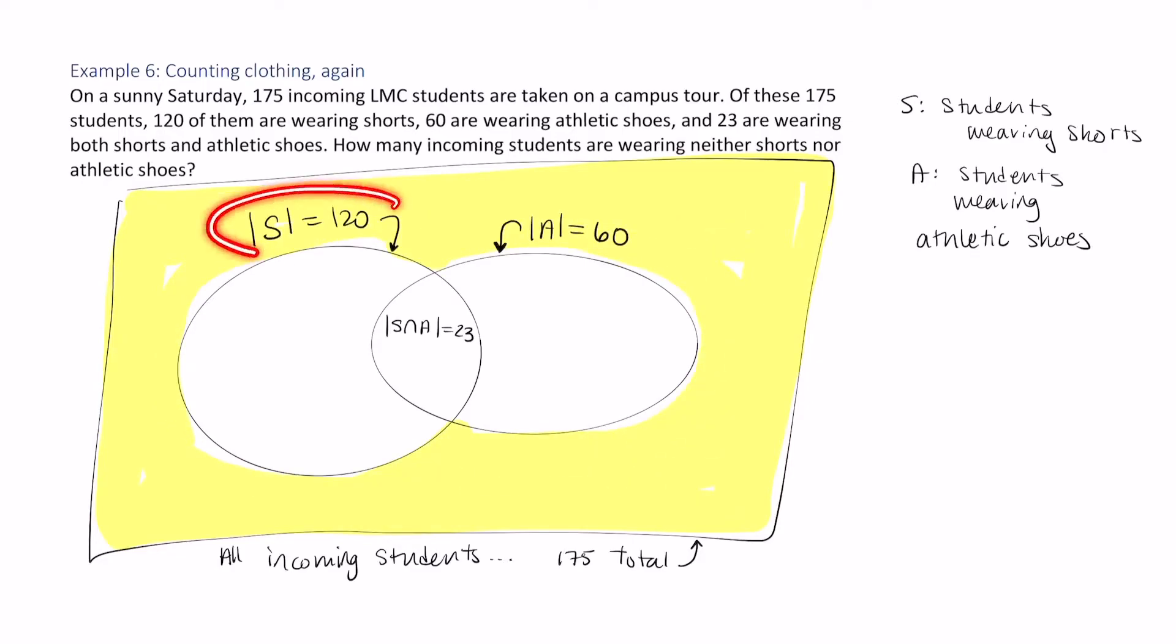Okay, and clearly, just to avoid confusion, this arrow is pointing at this circle, since inside this oval there are 120 students. Inside of this oval, it's the 60 students wearing athletic shoes. And in this yellow region, what do we call this yellow region? It is the complement of students wearing shorts or wearing athletic shoes or wearing both.